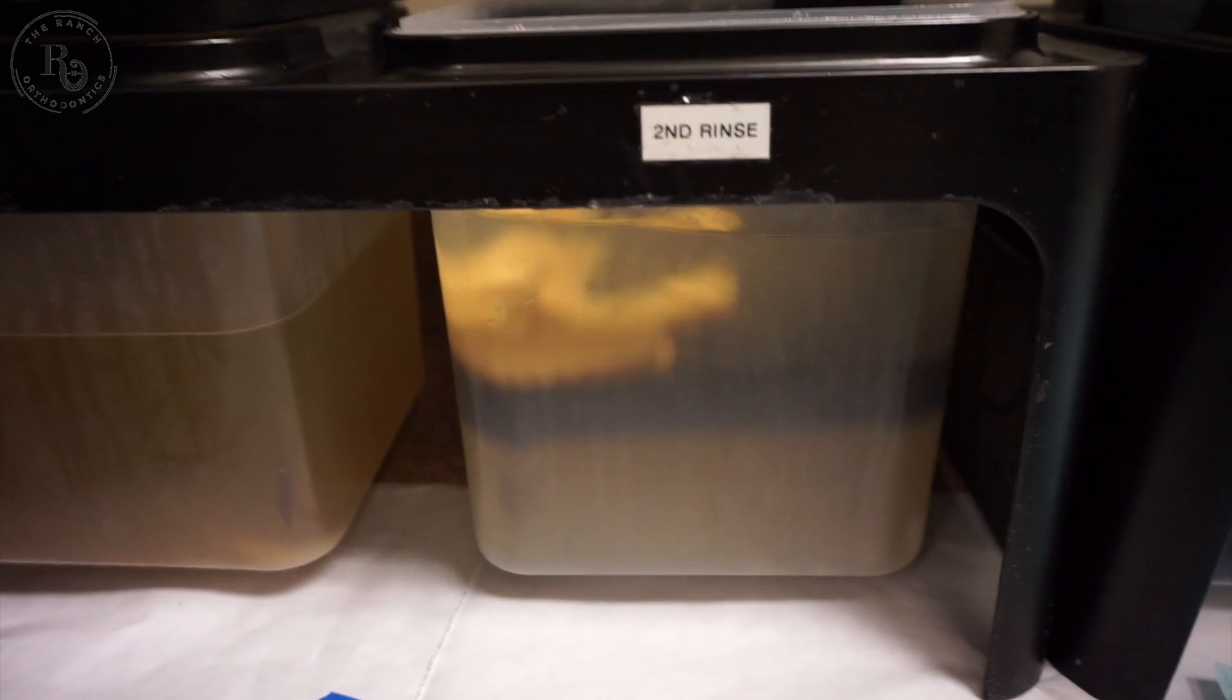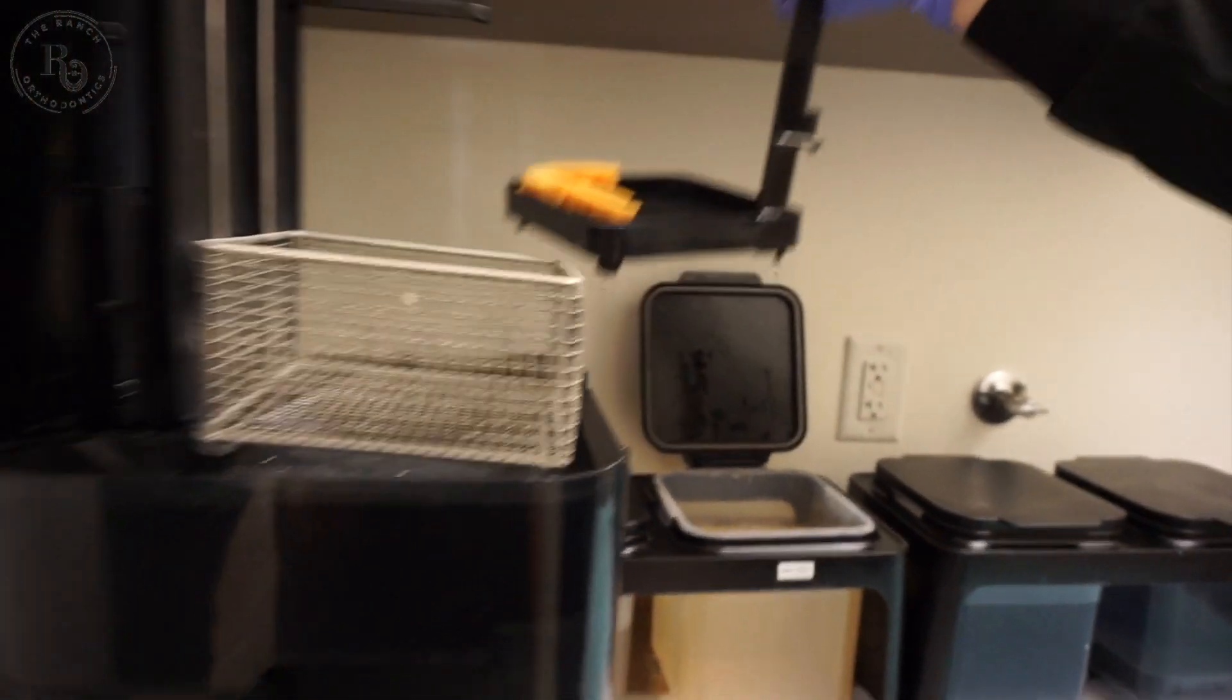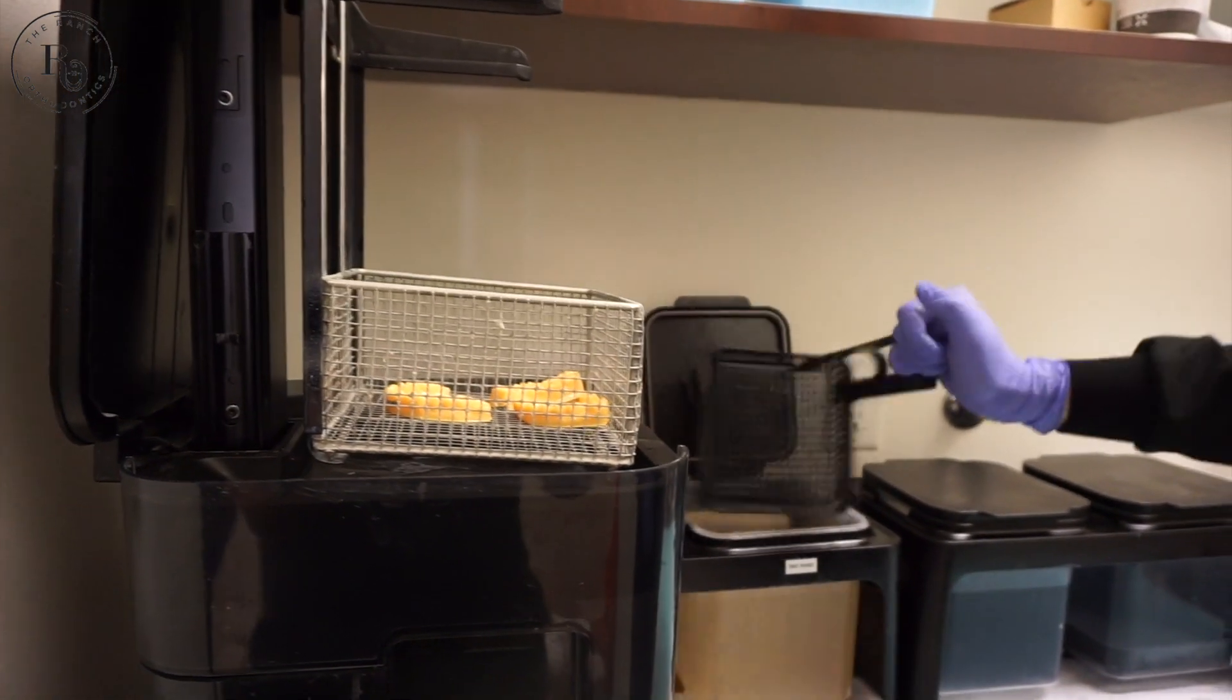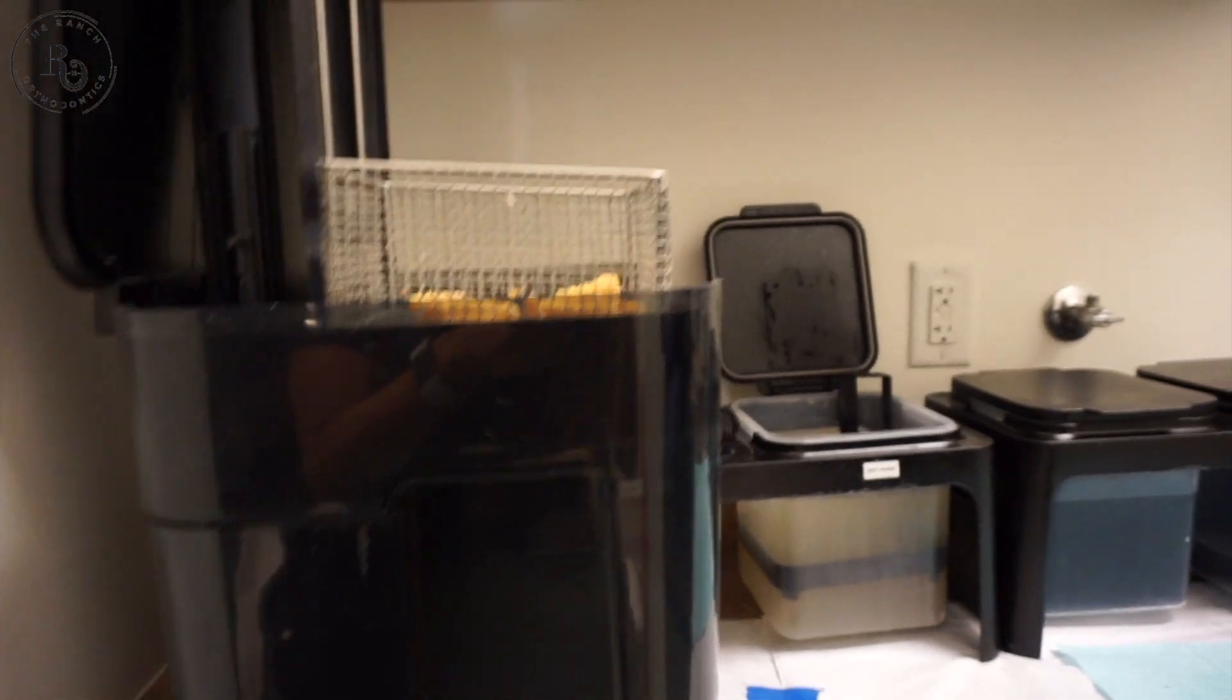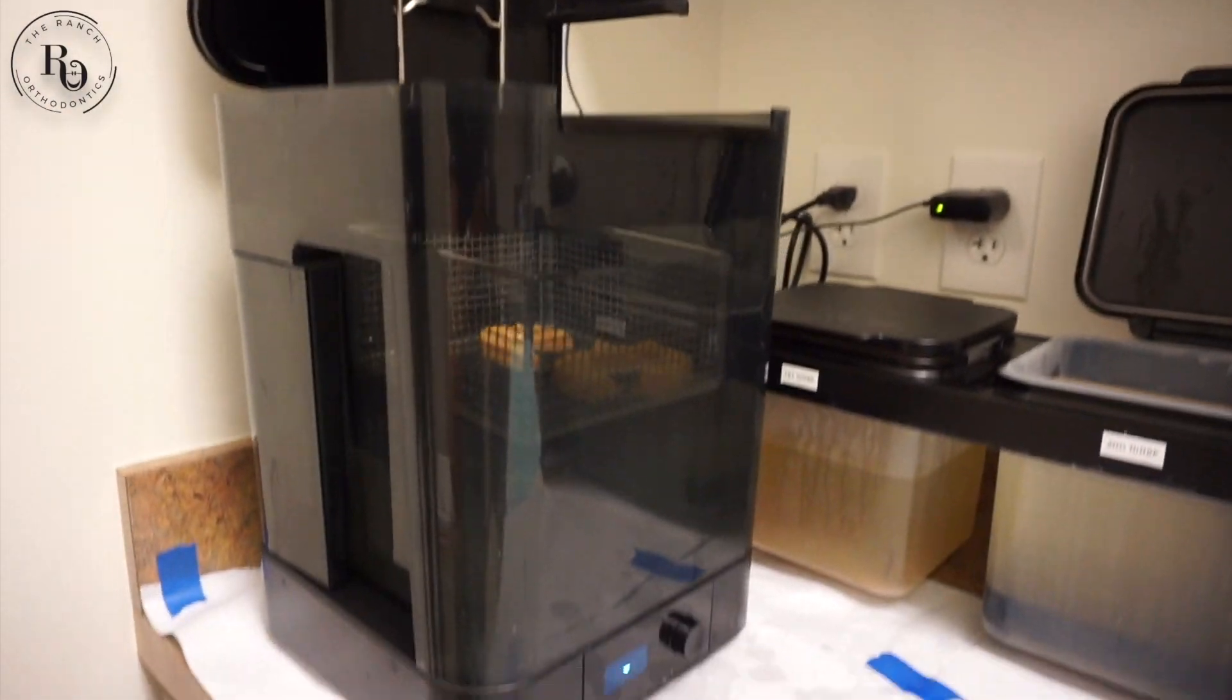Now we're washing them in alcohol. We have a few different steps. We put them through a couple of rinses and then they're going to go into this automated washer. We'll drop them down in this little basket and they'll swish around in there.